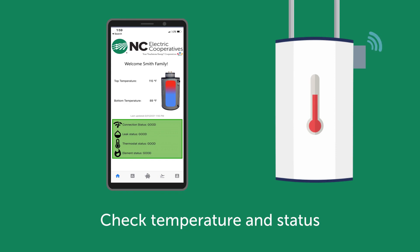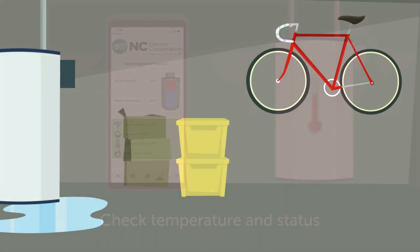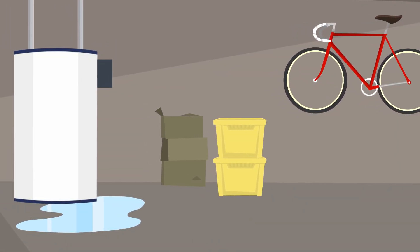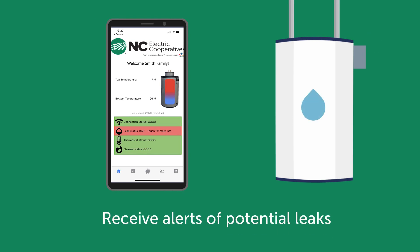Use the app at any time to check your hot water temperature and status. If your water heater has a leak, the app will alert you to unusual energy usage indicating a potential leak. This gives you the opportunity to make repairs to your water heater before things get out of hand.